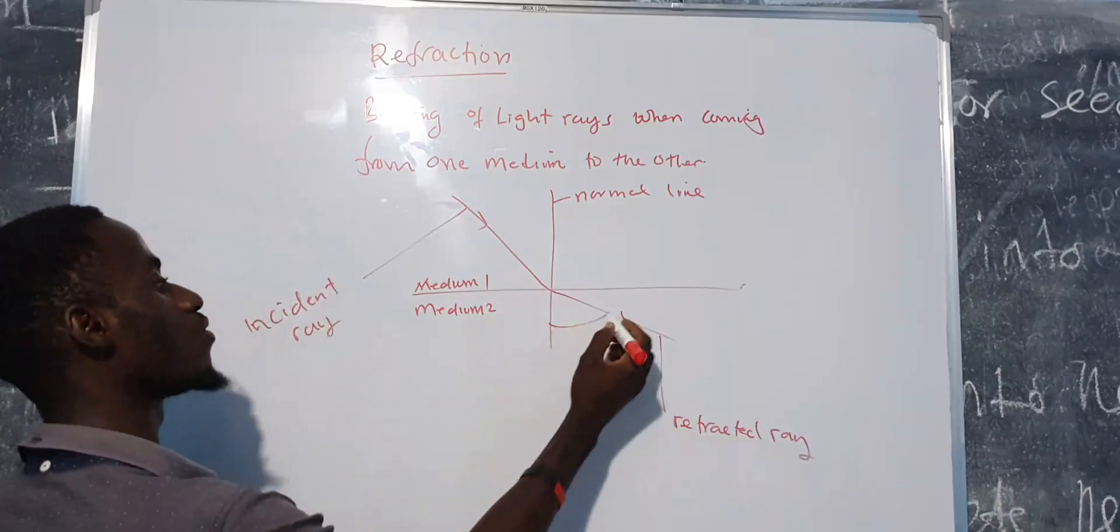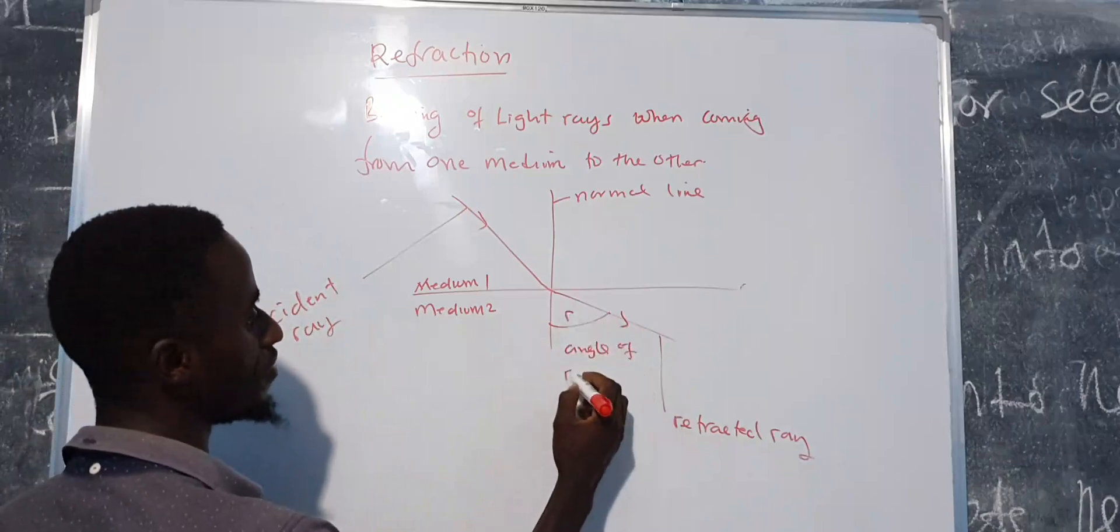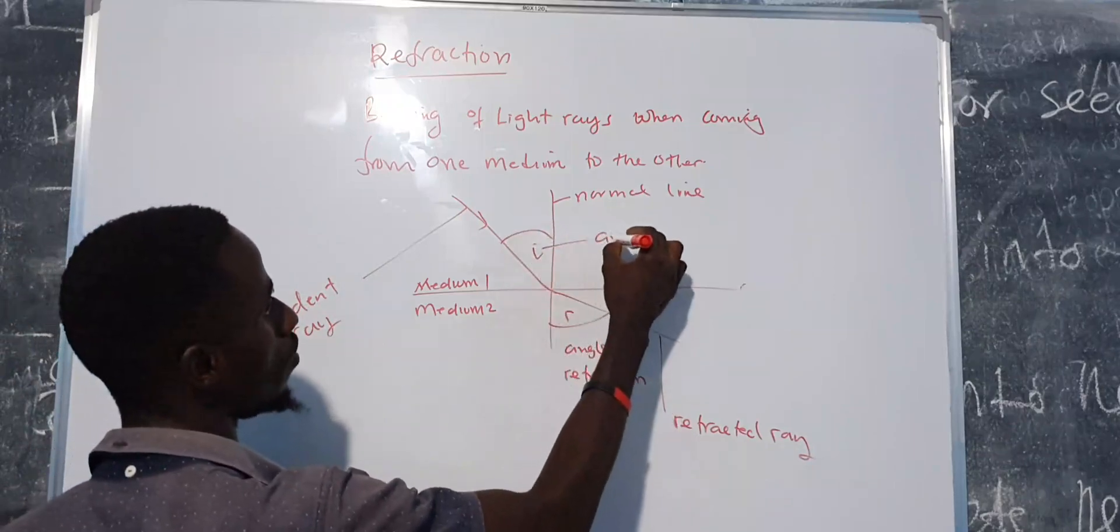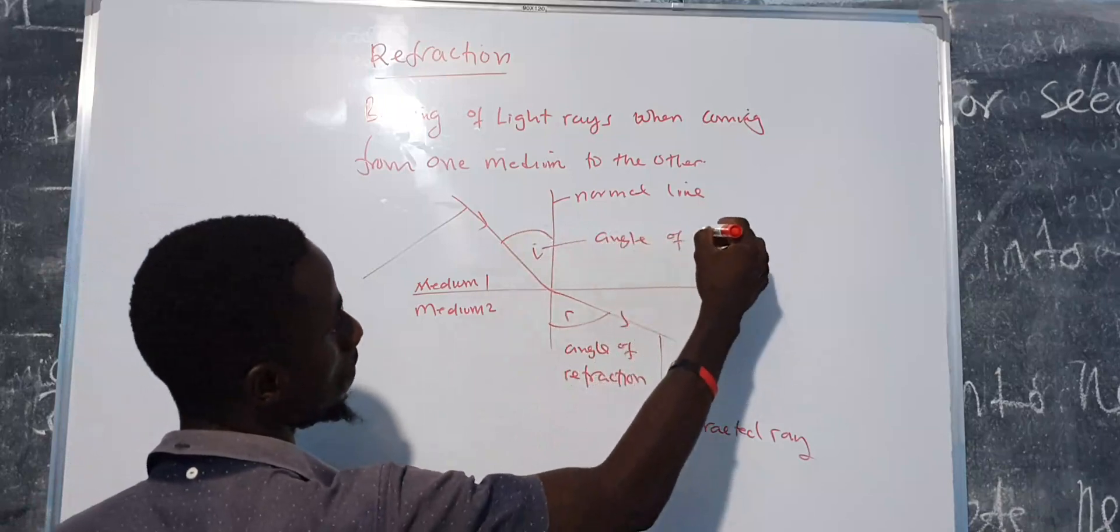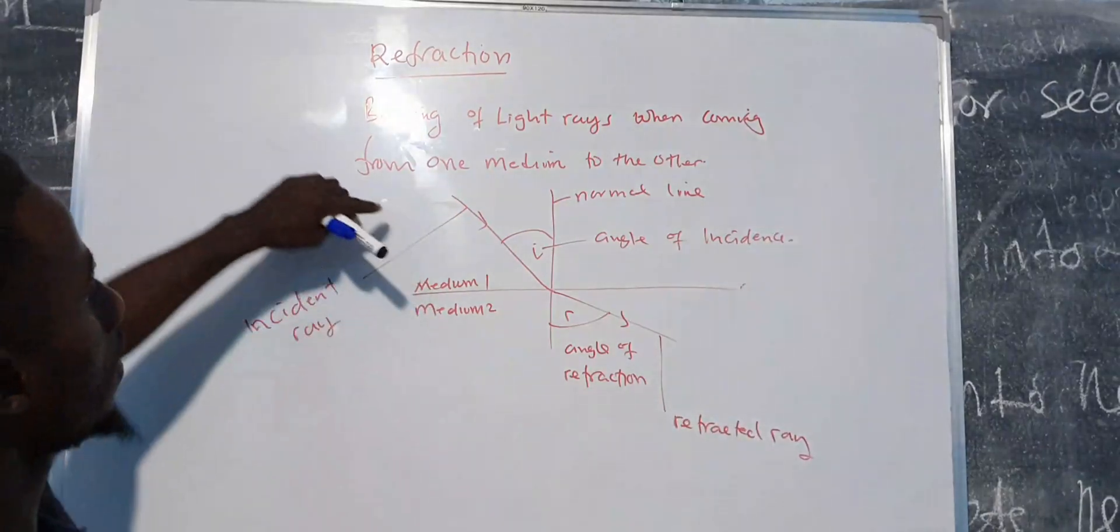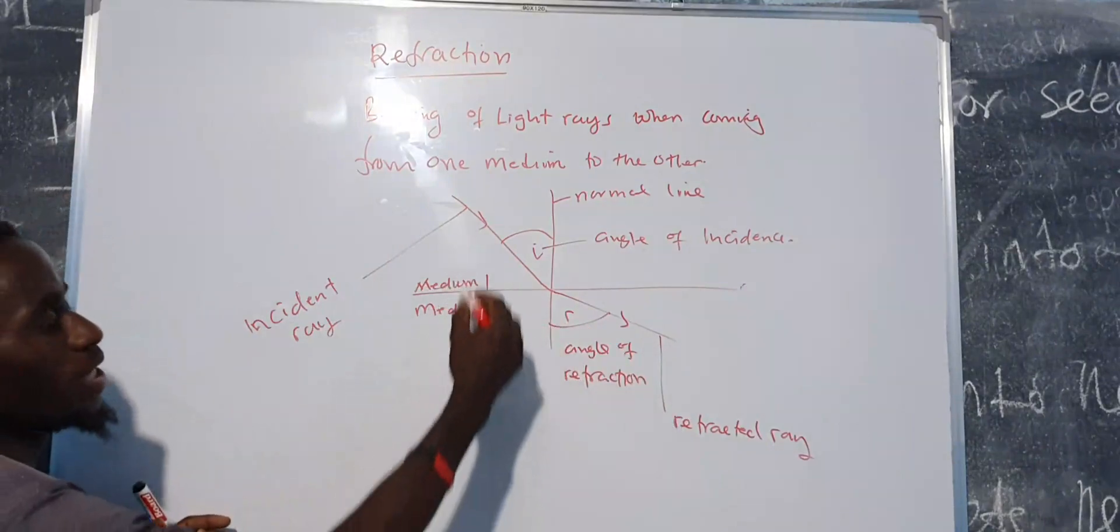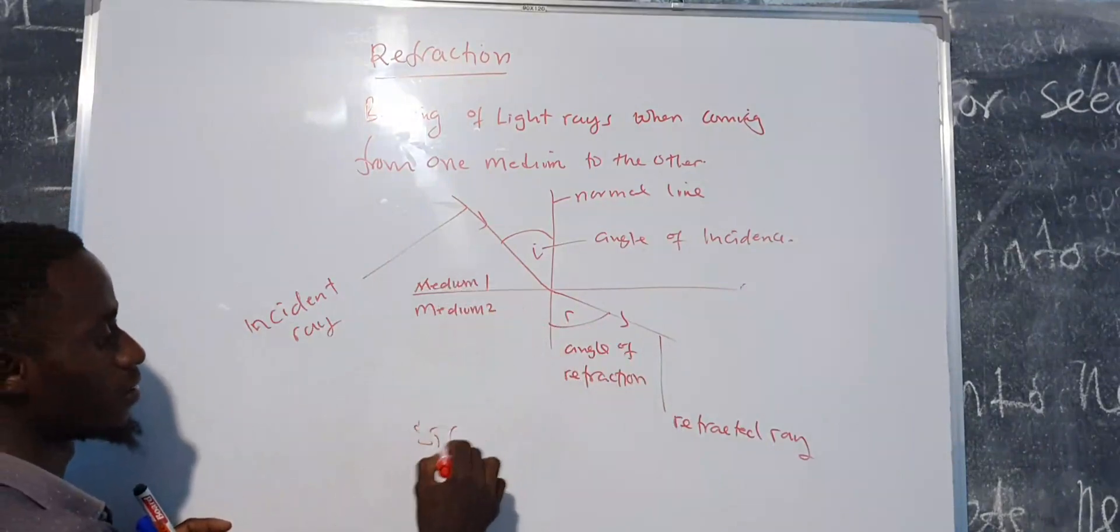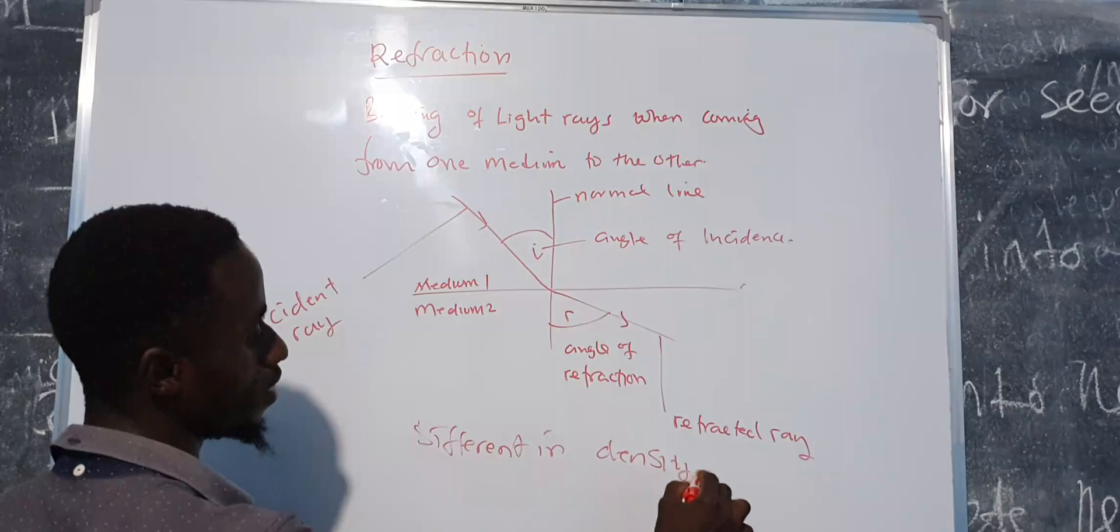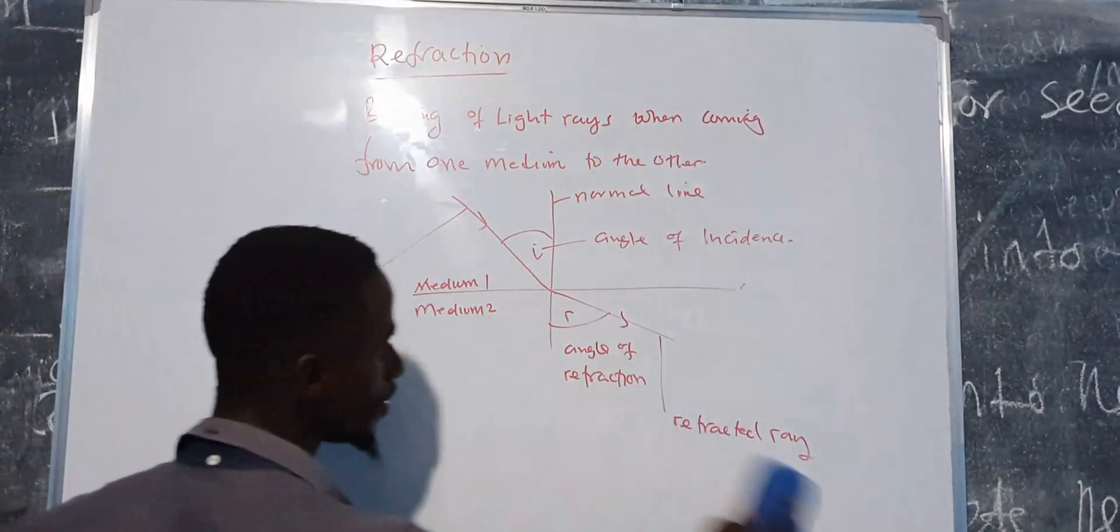And this angle here is what we call the angle of refraction, and this angle here is what we call the angle of incidence. So this is what happens: when light is coming from one medium going to the other medium, it usually bends. Why? Because the two media are different in terms of density. That's why light is able to bend.